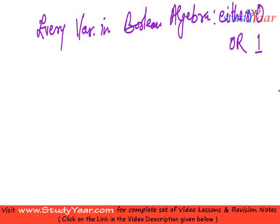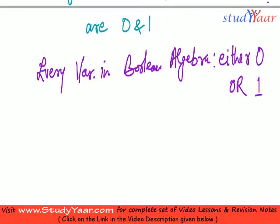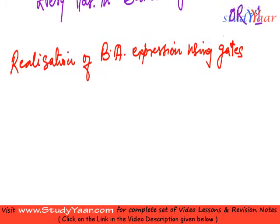Let's understand how do we realize a Boolean algebra expression using gates. So how do we do this?